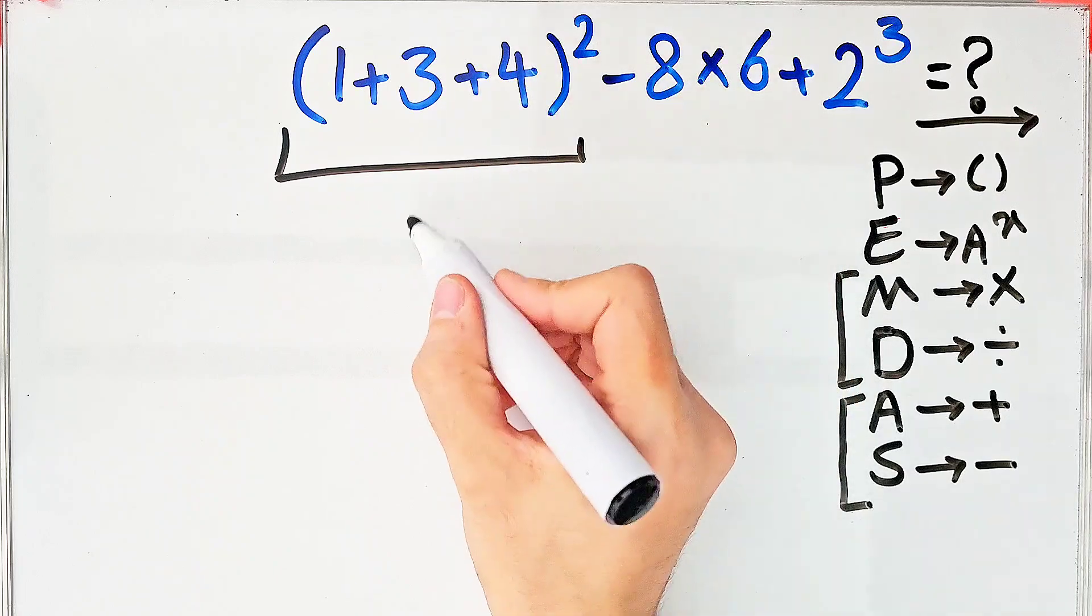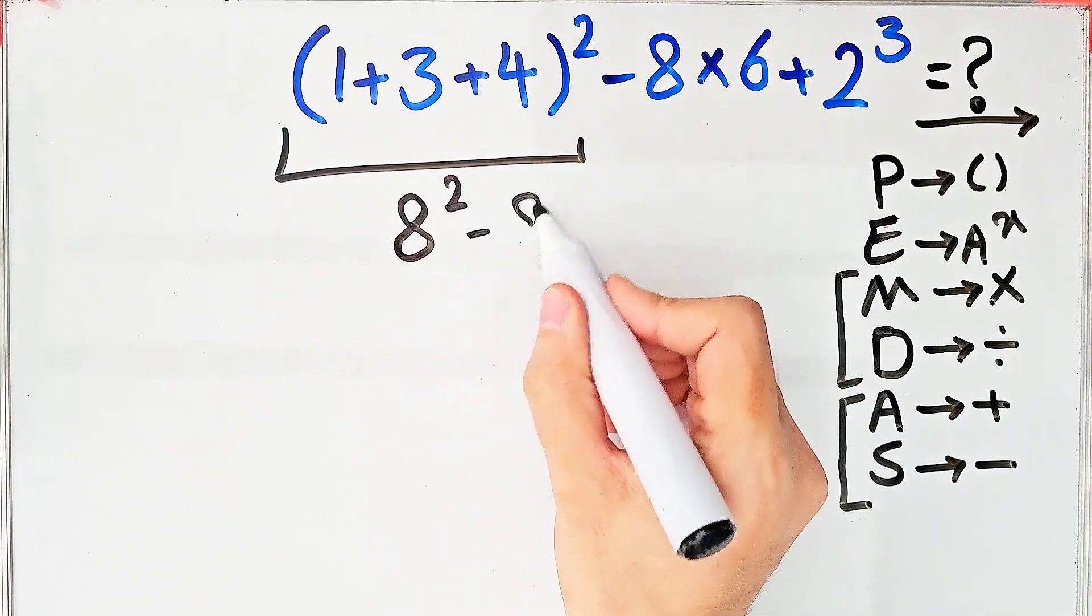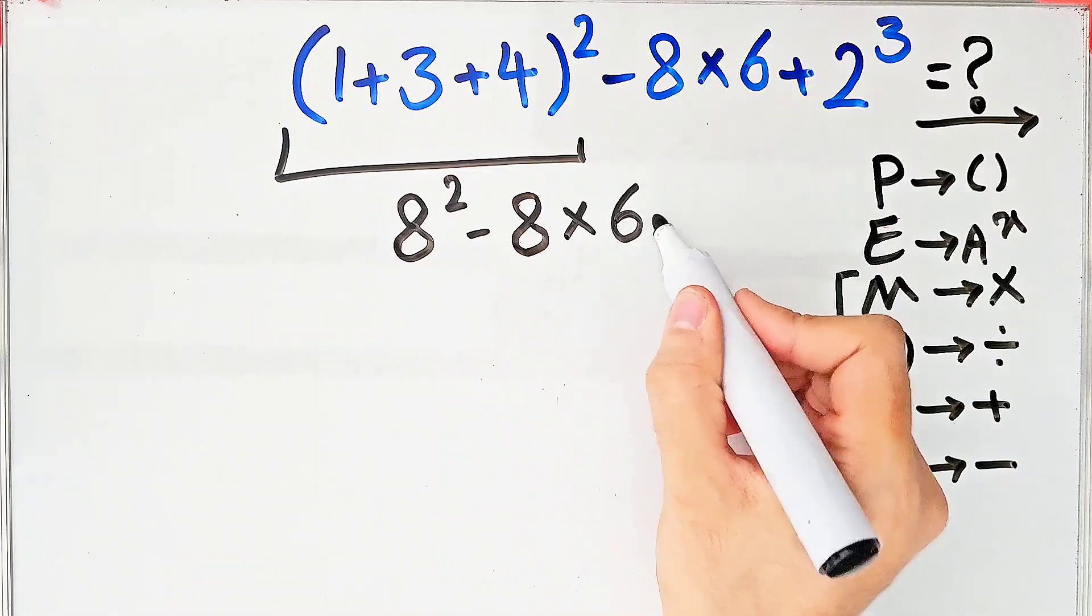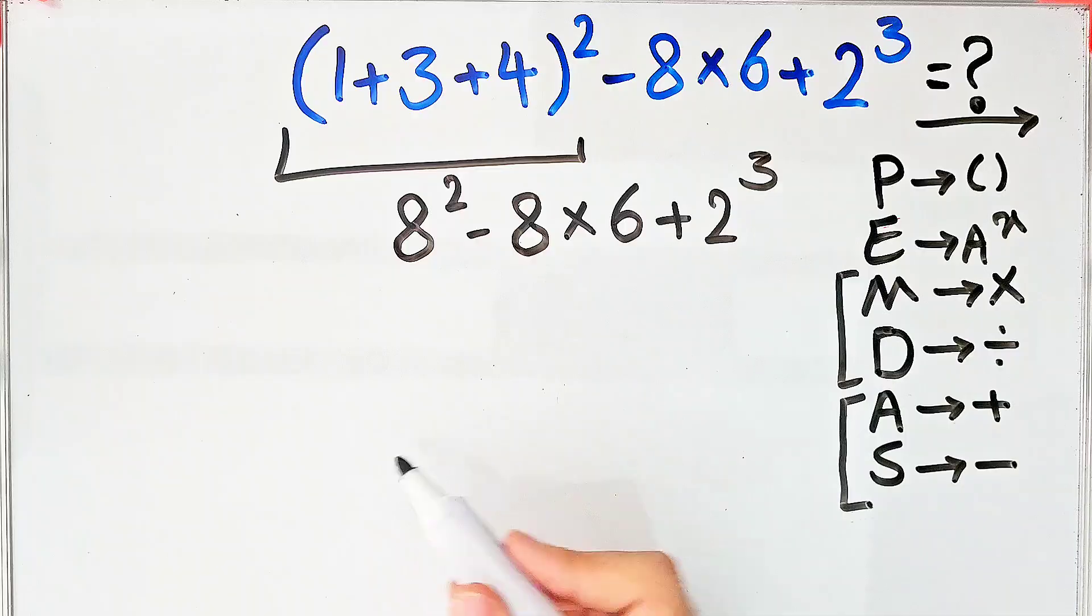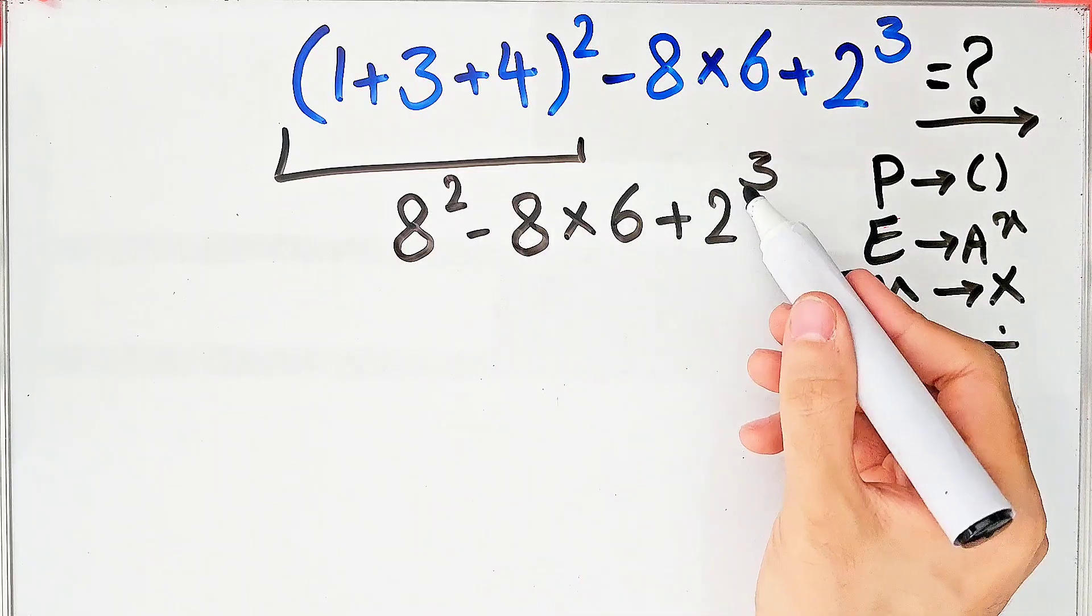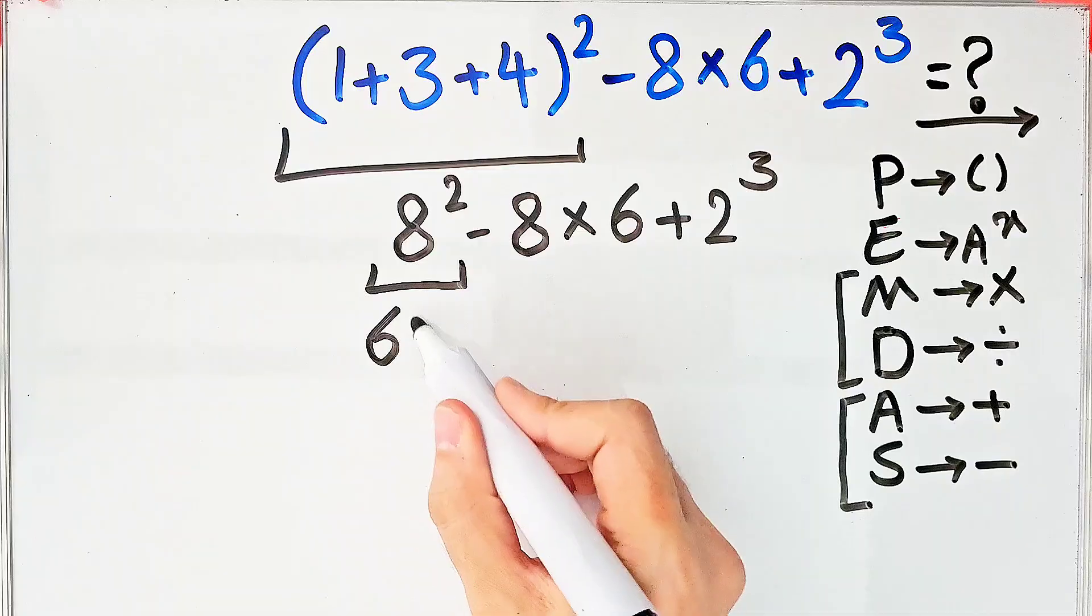Now we have eight to the power of two minus eight times six then plus two to the power of three. In this step we simplify the exponents. Eight to the power of two equals sixty-four.